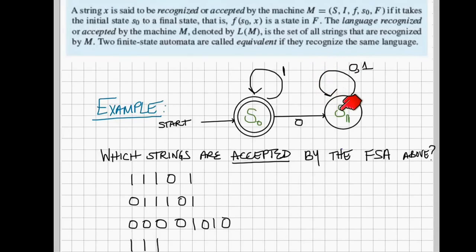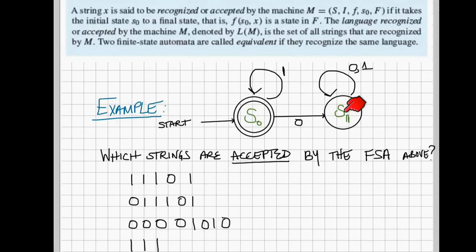And a 0 which pulls me back to state S1. So after processing this string, we end up at state S1 which is not an accepting state.